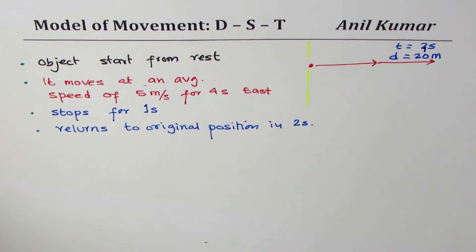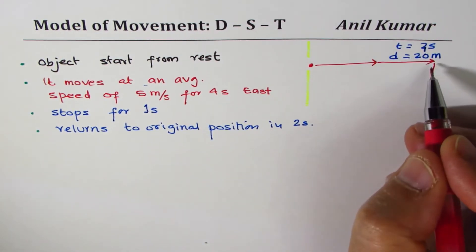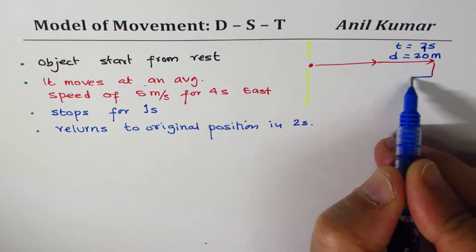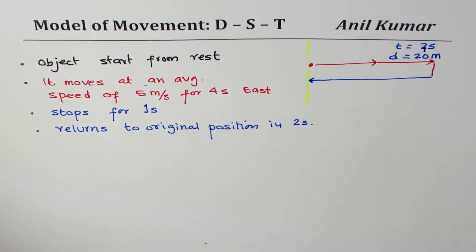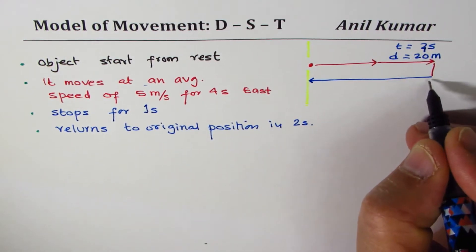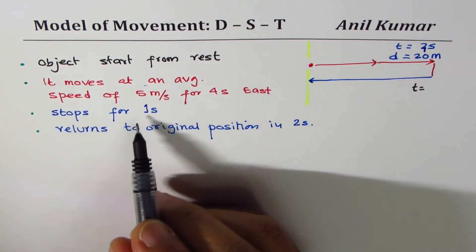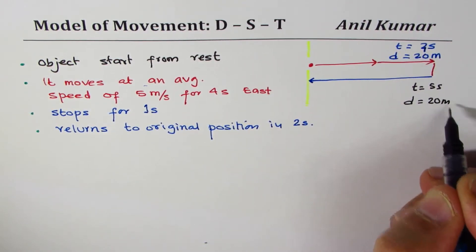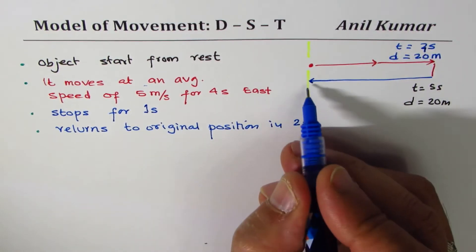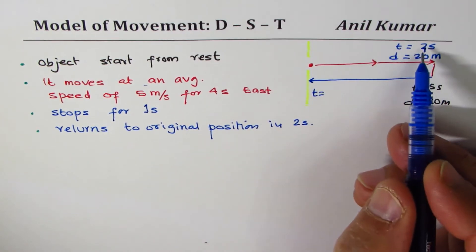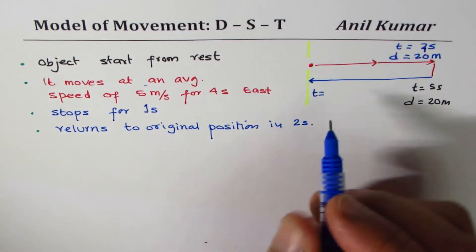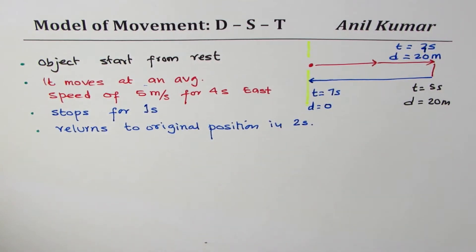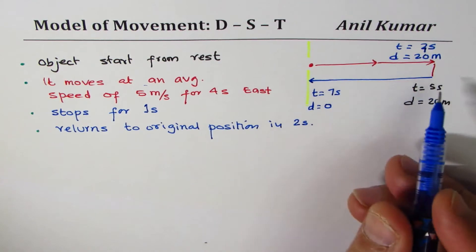Now it stops for one second, so the time moves on but the distance stays the same — twenty meters. That means at t = five seconds, the distance is still twenty meters. Then it returns to the original position in two seconds, so at t = seven seconds the distance from the starting point is zero.